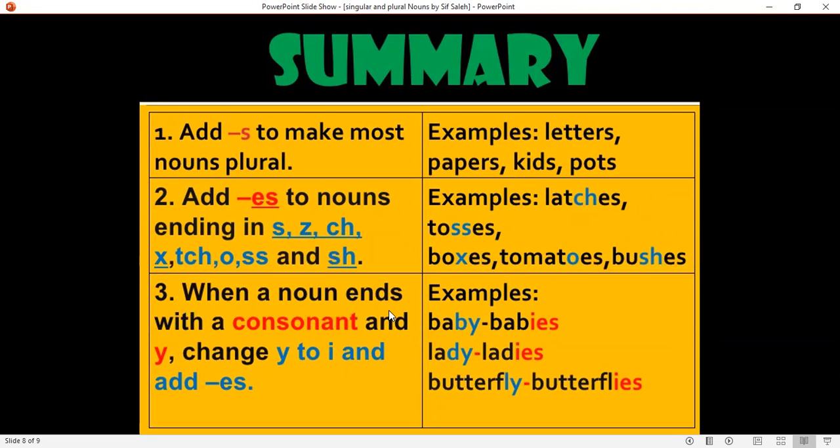When a noun ends with a consonant and Y, change Y to I and add ES. Examples: baby, babies; lady, ladies; butterfly, butterflies.